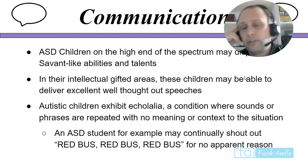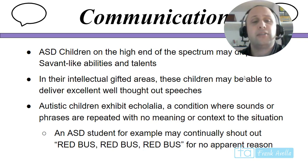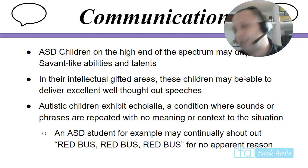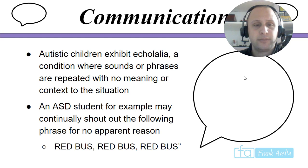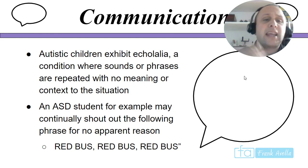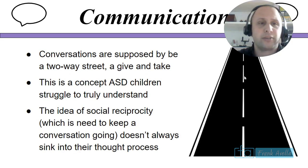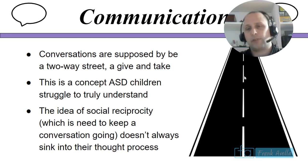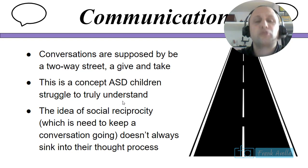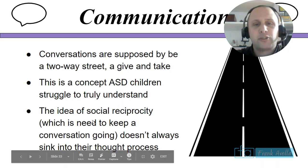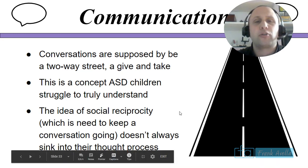For example, for no reason an ASD child might keep saying 'red bus, red bus, red bus.' Conversations are supposed to be a two-way street — a concept ASD children struggle to truly understand. The idea of social reciprocity, which is the need to keep the conversation going, doesn't always sink into their thought process. They only think about their own understanding; it's a one-way street for them.